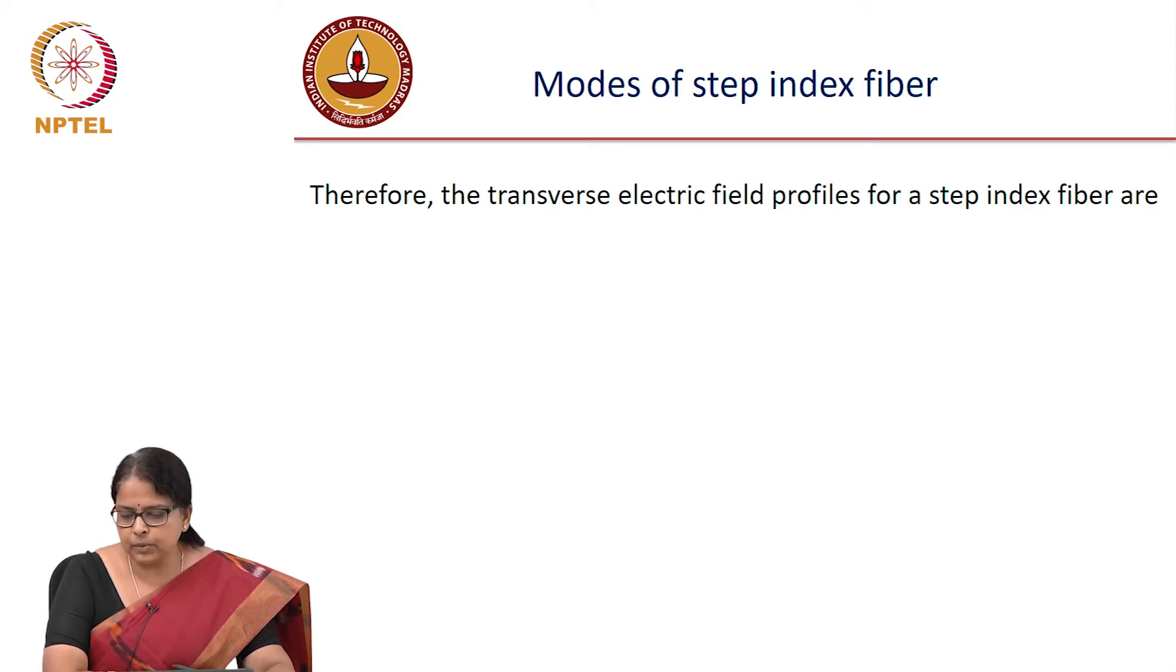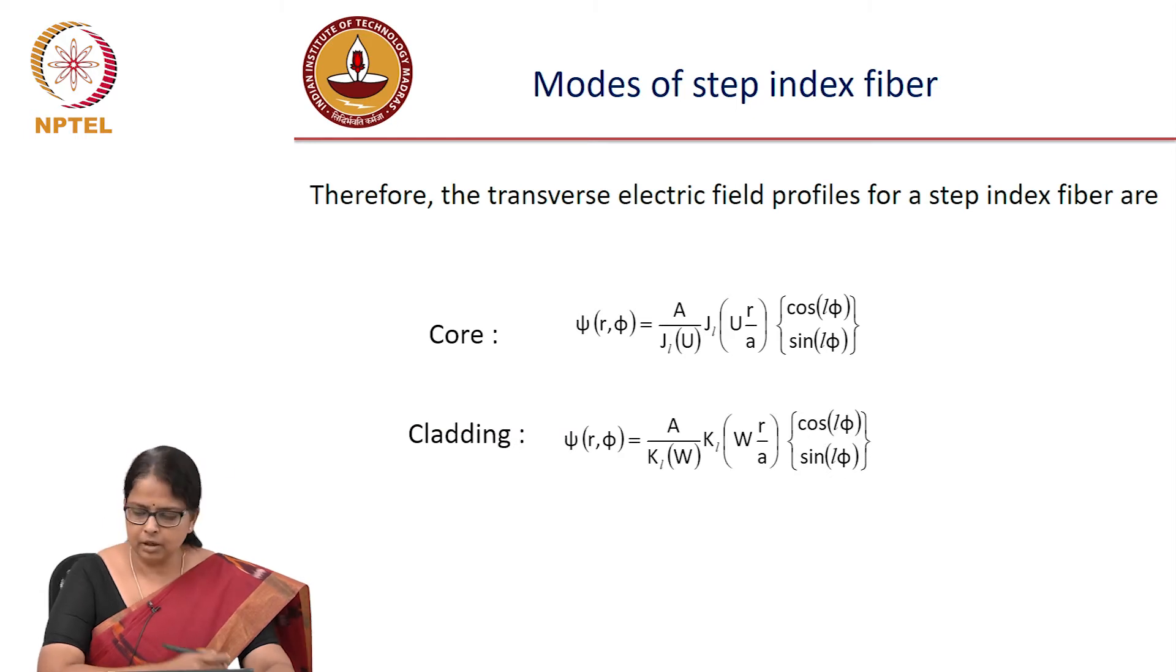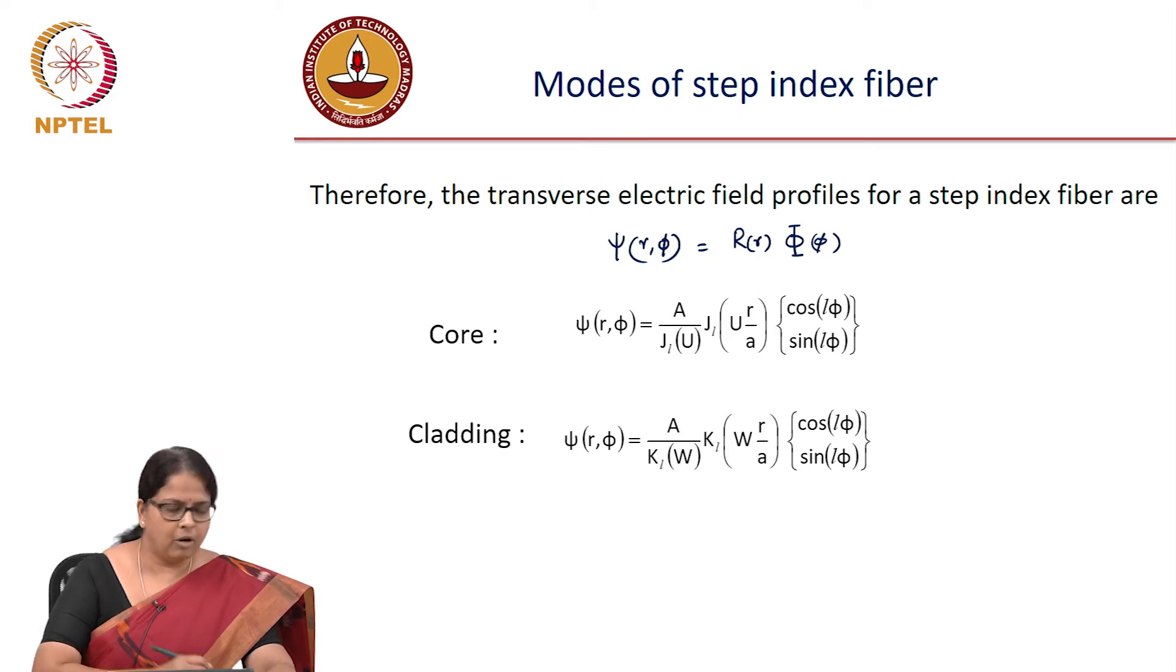So the transverse complete field profile are these two. You have ψ(r,φ), where is this coming from? You said r, it is a product of r a function of r and φ a function of φ. Of which φ a function of φ you already said it is either cos φ, cos Lφ or sin Lφ.